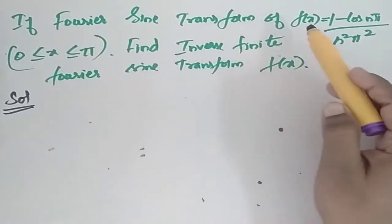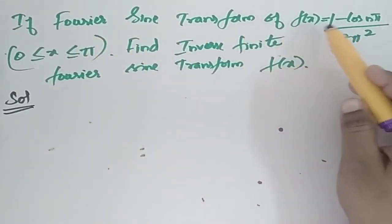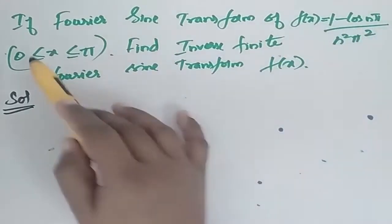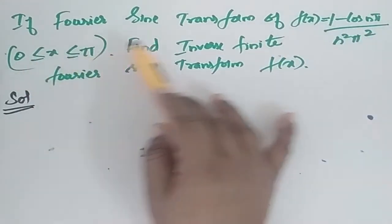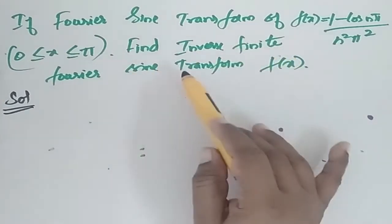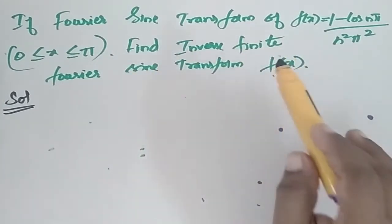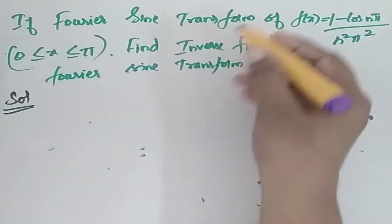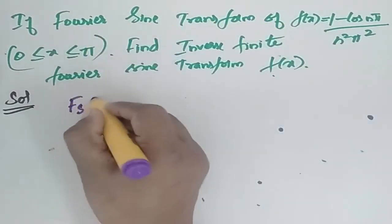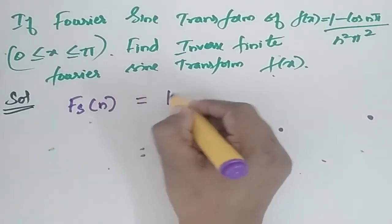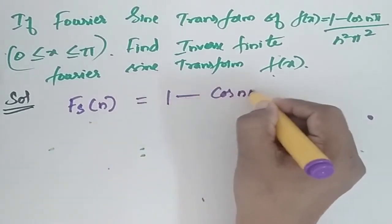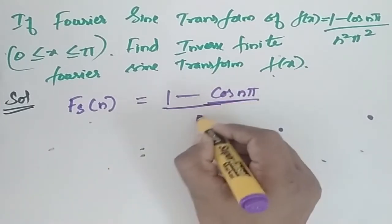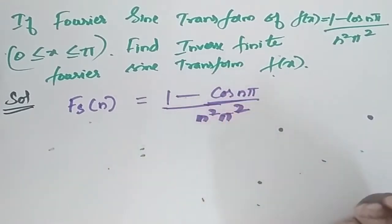If the Fourier sine transform of f(x) is equal to (1 - cos nπ) / (n²π²), where x is from 0 to π, find the inverse Fourier sine transform of f(x). So, f(n) is equal to (1 - cos nπ) / (n²π²).